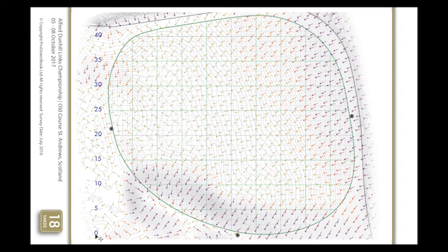Corresponding to that, these blue numbers indicate how many yards on from the front edge of the green the grid lines are. So this line here is 20 yards on, this side is 25, et cetera.